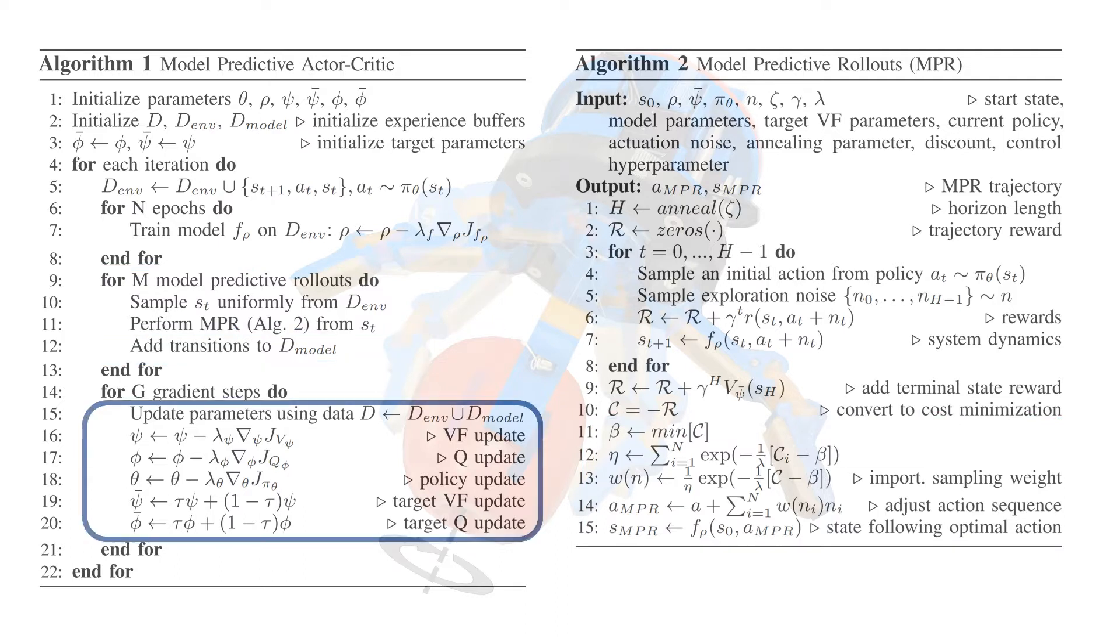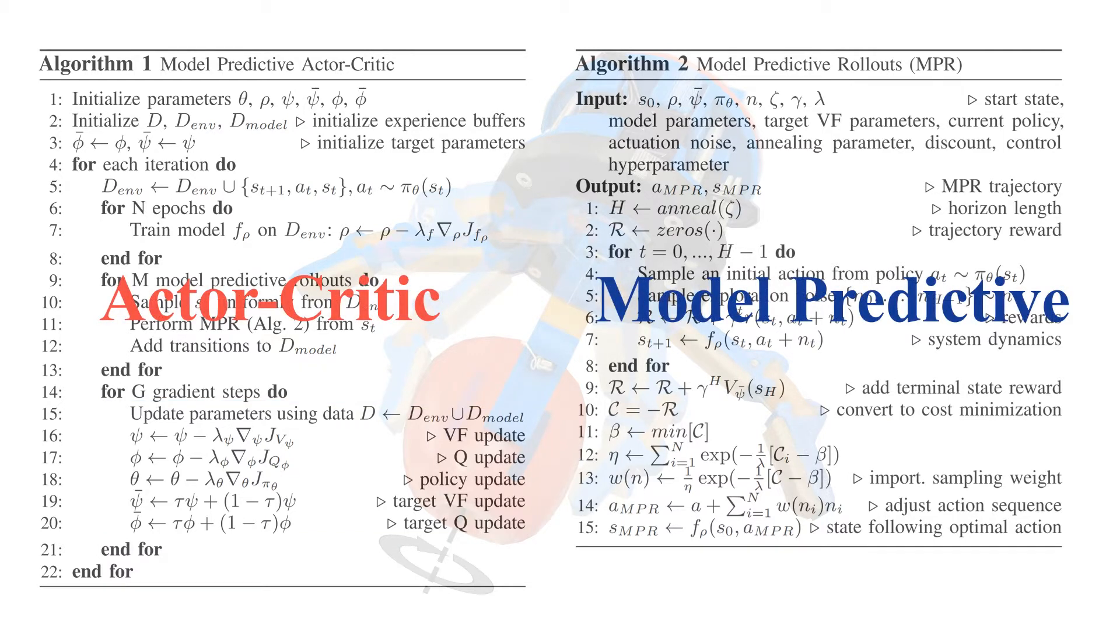We sample transitions from the augmented buffer to optimize both the actor and the critic. This combination guarantees optimal skill learning and reduces necessary physical interaction with the environment.